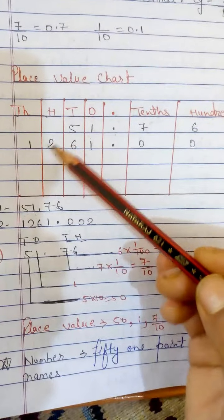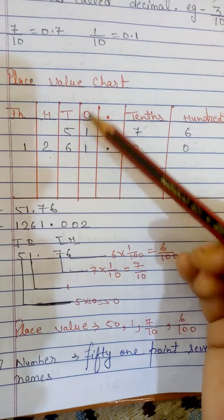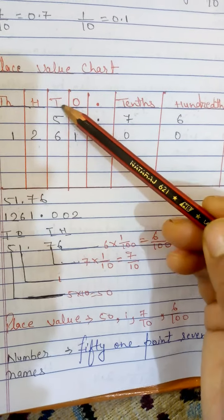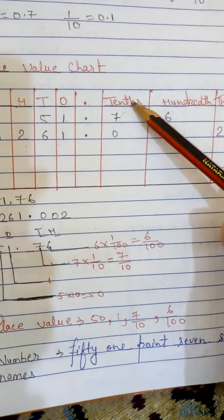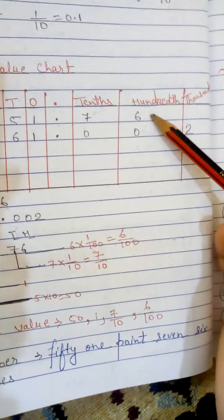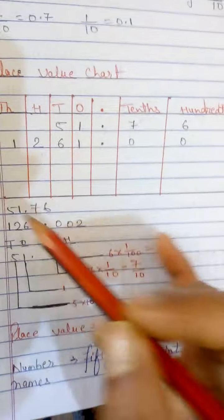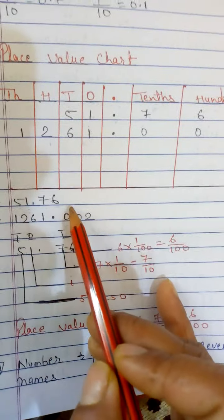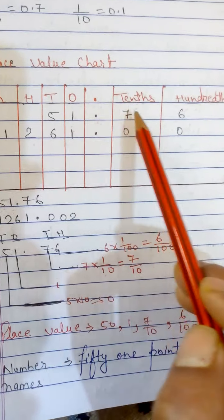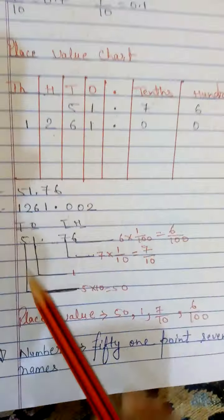In the place value chart, we have ones, tens, hundreds, thousands — we have already understood these. After the decimal point, we have tenths, hundredths, thousandths. So for the number 51.76: five is in the tens place, one is in the ones place, and after the decimal, seven is in the tenths place and six is in the hundredths place. Clear?